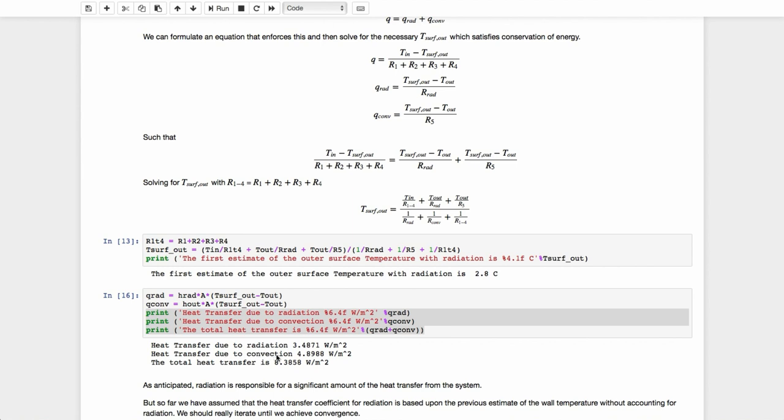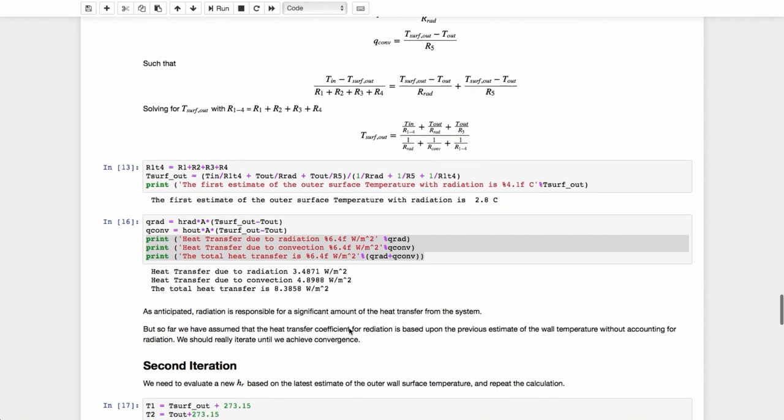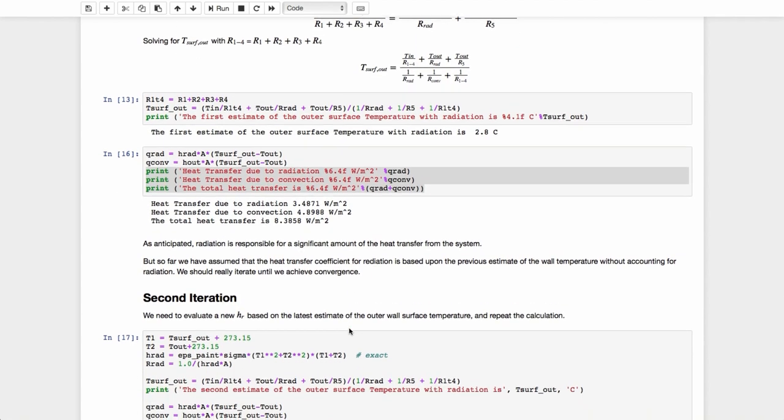Now, with these numbers, we could calculate a new estimate of that surface temperature. And remember, the h_R, the heat transfer coefficient due to radiation, is a strong function of that surface temperature. So we're going to have to iterate this in order to solve it because of that radiation term. So let's do that again.